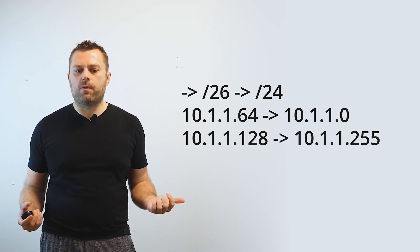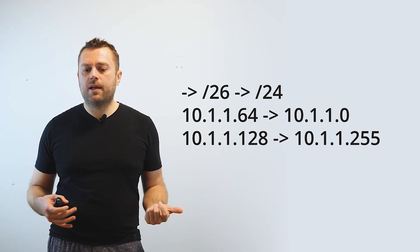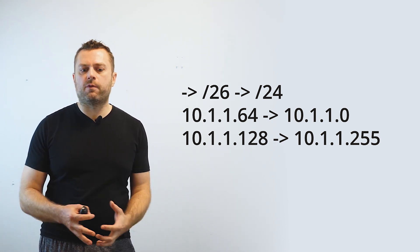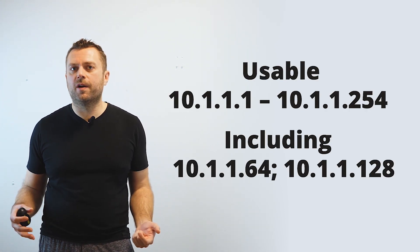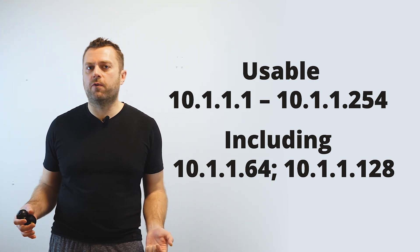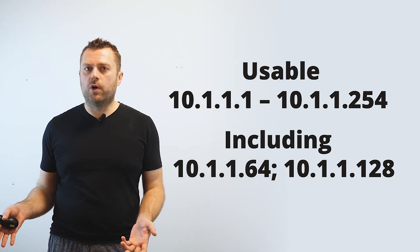But if we take this network and change the subnet mask from /26 to /24 and increase it, we're basically changing it back to our previous network — 10.1.1.0 as your network and 10.1.1.255 as your broadcast — because you have a much bigger range to work with. Your usable range is now back to 10.1.1.1 up to 10.1.1.254, which includes 10.1.1.64 and 10.1.1.128.